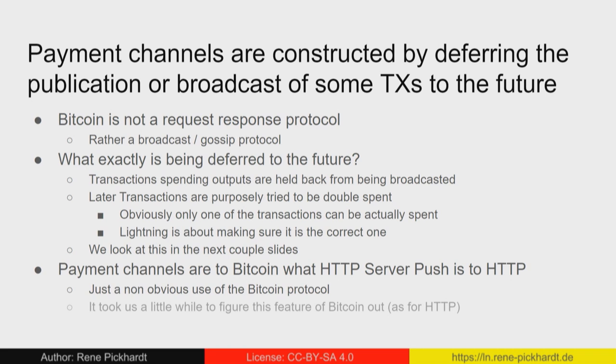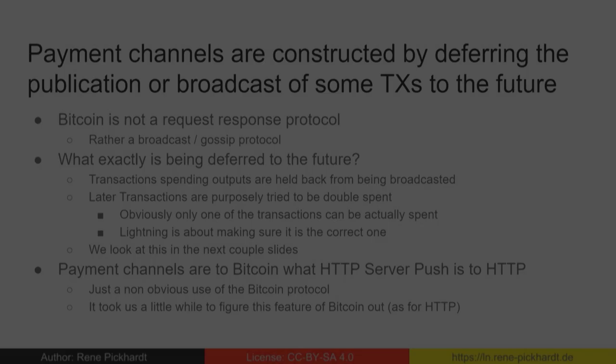The entire Lightning Network construction is about making sure the correct transaction is being spent at some point in time—not some transaction from the past that encoded an old channel balance or channel state. Payment channels to Bitcoin are basically what HTTP server push or Ajax is to HTTP: just a non-obvious use of the Bitcoin protocol. Like in the HTTP case, it took us a little while to figure this out. My personal opinion is that in 10 years people will just use Lightning to transfer Bitcoin and not be aware that there's a Lightning Network in the background—in the same sense that most people use the web without knowing Ajax and push technology are working in the background.